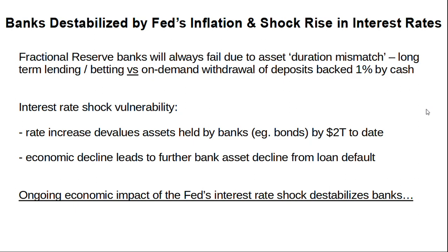When you've only got one percent cash, you can't withstand appreciable withdrawals — as we've seen with the five banks that have become destabilized. You can't have a run on the bank because it rapidly devolves. The interest rate shock creates two vulnerabilities: first, the rate increase devalues the assets held by the bank — we discussed the two trillion dollar hole in bank balance sheets from the devaluation of bonds and other assets due to the rate increase. The second is that it leads to further bank asset decline from loan defaults as economic decline causes further damage.